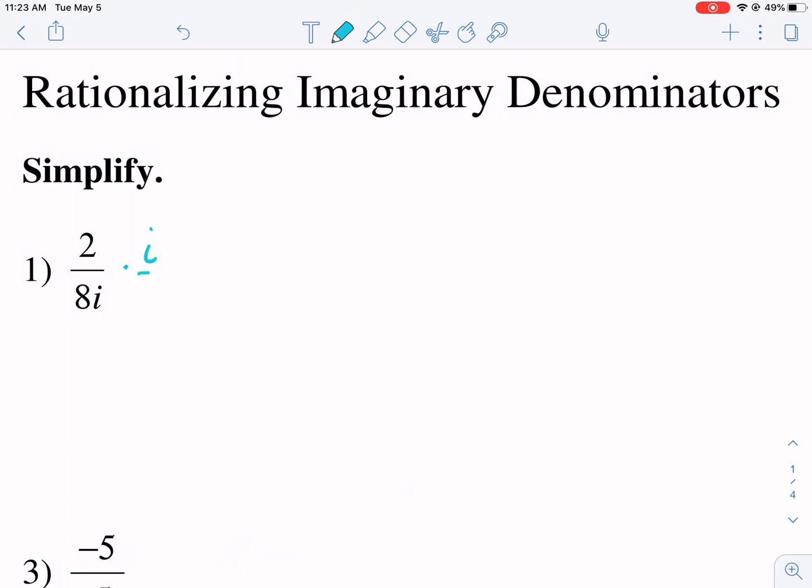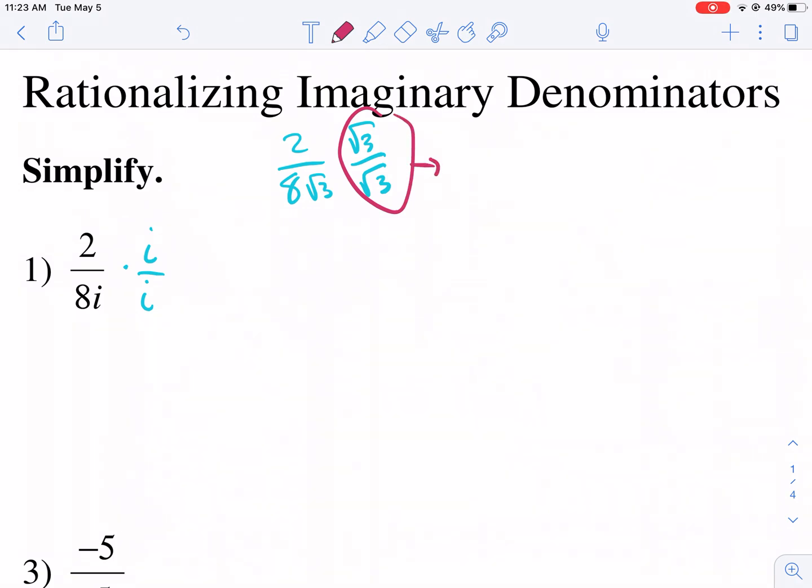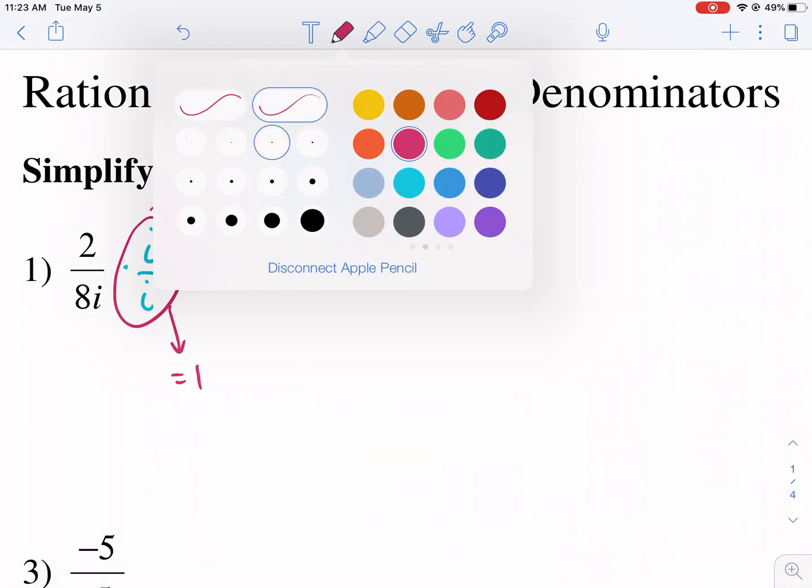So what we're going to do here is it's in the same way like if we had 8 over radical 3, we would multiply radical 3 over radical 3. We don't want a radical in the denominator, neither do we want an imaginary number in the denominator. So because we can multiply both the top and bottom by the same thing, because this is equal to 1 in the same way that this is equal to 1. So if we multiply it by 1, we're not changing the value, we're just changing how it looks. So let's proceed from there.